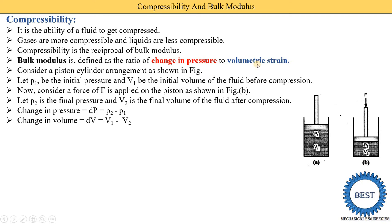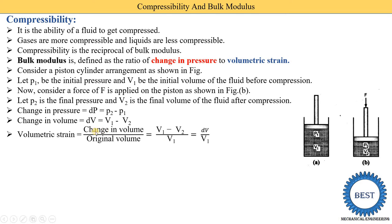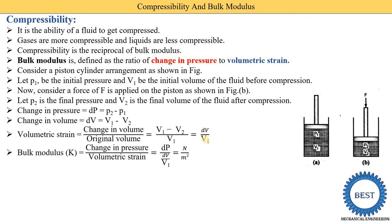Volumetric strain is equal to change in volume divided by original volume. Change in volume is v1 minus v2, and the original volume is v1, so volumetric strain equals dv divided by v1. The equation for bulk modulus K equals change in pressure divided by volumetric strain, which is dp divided by (dv upon v1).